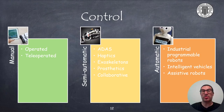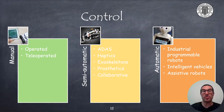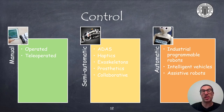Robots can be manually controlled, semi-automatic, or fully automatic. In manual control, decisions are only made by the human operator, and the robot acts as a machine to be controlled. Robots with semi-automatic control are used in applications where decisions are shared — part of them are taken by the human and other decisions are taken by the robot. This is the case of ADAS (advanced driving assistance systems), haptics, exoskeletons, prosthetics, and collaborative robots.